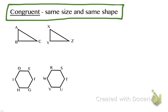I can see that triangle ABC is the same size and shape as triangle XYZ. So I can write a congruence statement just like I would normally write a similarity statement.